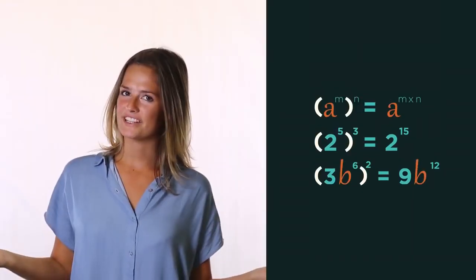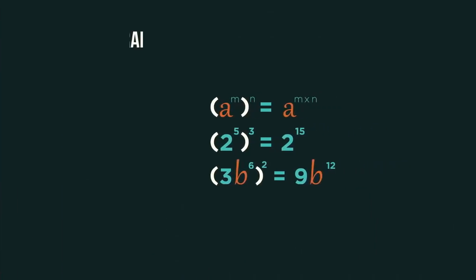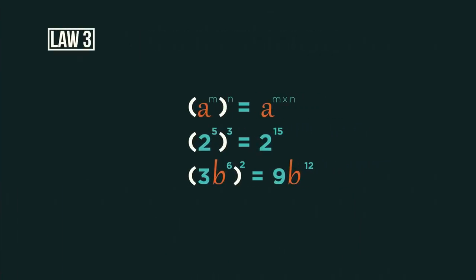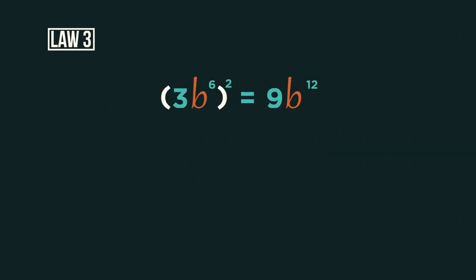So what do you notice about these three? When powers are raised to a power we multiply the powers together. On this one be a little careful. Don't forget because the three is also inside the brackets it needs squaring too, hence nine. But then six multiplied by two is twelve.